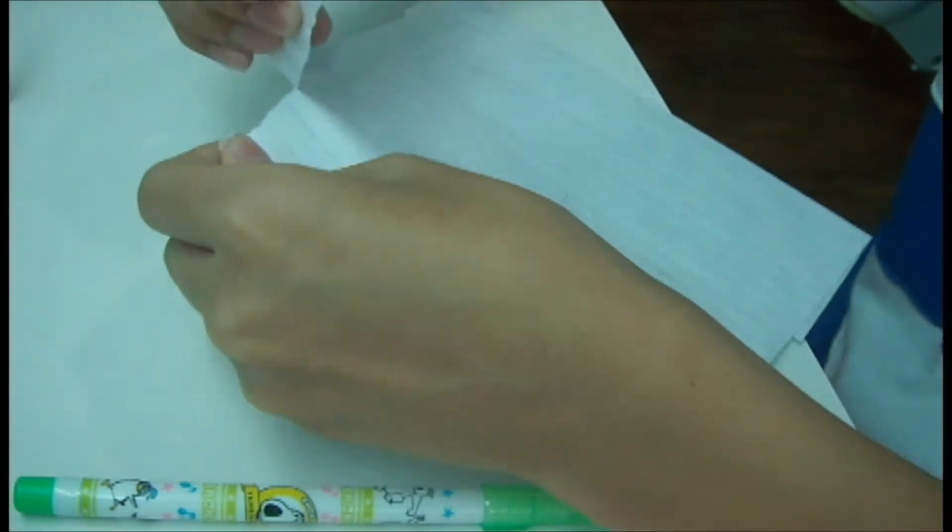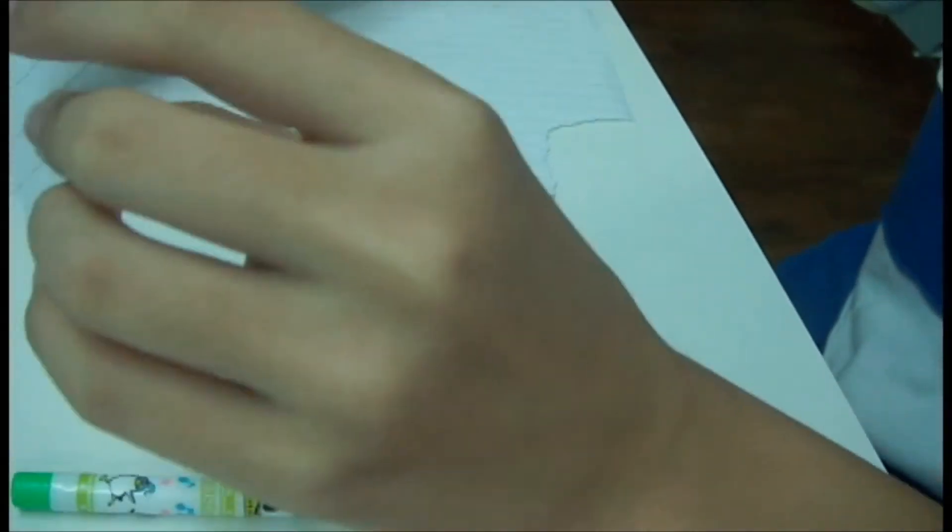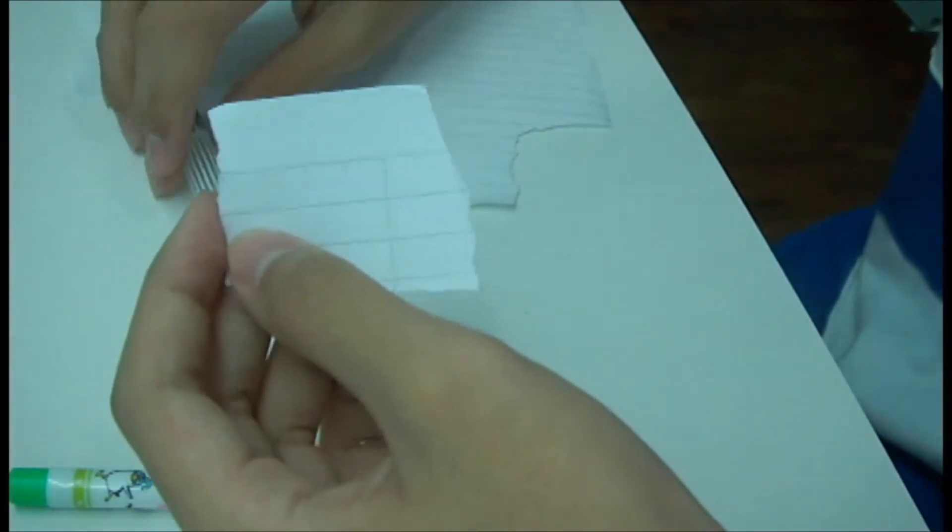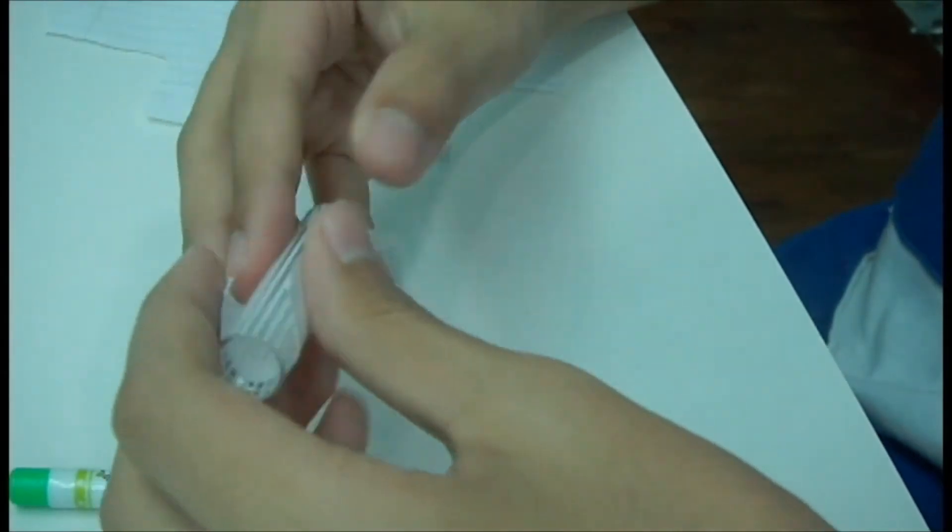What you need is paper. Printing paper works fine - actually it's the best. This paper is fine too, like a small piece or a large piece. Then you need a barrel, something that you do not want or do not need. A BIC barrel is fine.